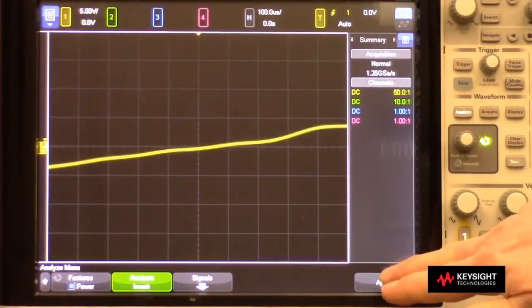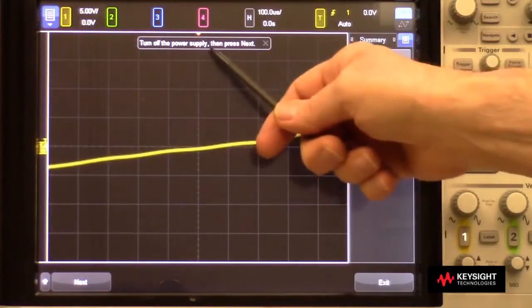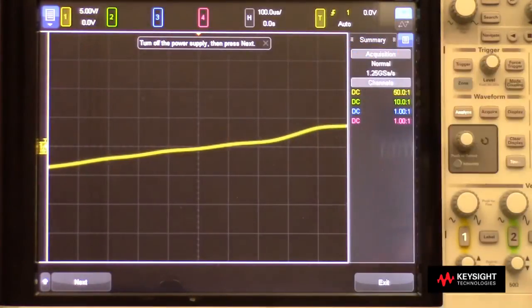To begin the measurement, I'll press Apply. When I press Apply, I get an instruction that tells me to turn off the power supply, then press Next.